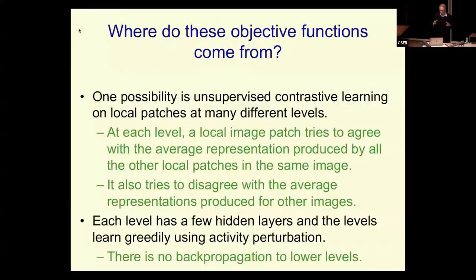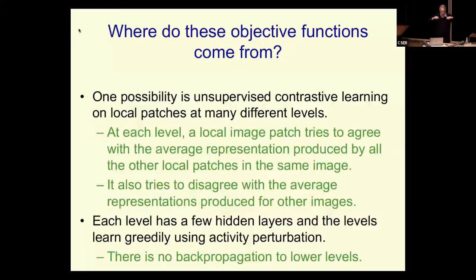Here's one possibility for vision. You take patches of an image, and you have a little net that extracts a vector representing what's going on in that patch. You'd like to extract vectors that agree with vectors extracted by other patches of the same image, but disagree with vectors extracted for other images. This is called contrastive unsupervised learning, and it can be done at multiple levels — learning on local patches, trying to get their outputs to agree at the same level.